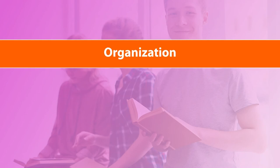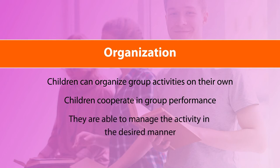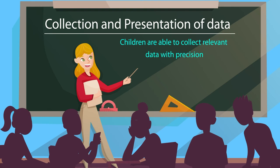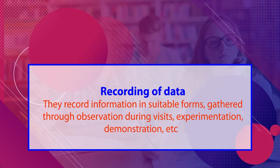Similarly, if you are organizing a group activity and your children are able to organize the activity, cooperate within the group, and manage the activities in the desired manner, then these are the indicators for organization. For collecting and presentation of data, if children are able to collect relevant data with precision, that is an assessment indicator. Other indicators include: participating in events on pollution, wastage, or conservation; believing in group tasks and respecting the contributions of other members; being aware of their own limitations; and being ready to help others or seek help from the group.